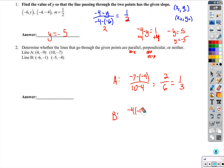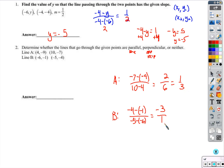Tensions are high. Negative 4 minus negative 1 over negative 5 minus negative 6. Negative 4 plus 1 is negative 3. Negative 5 plus 6 is 1. So line B has slope negative 3 over 1. One third and negative 3 over 1 are opposite reciprocals — if I multiply them together, 1/3 times negative 3/1, I get negative 1, which confirms they are perpendicular.